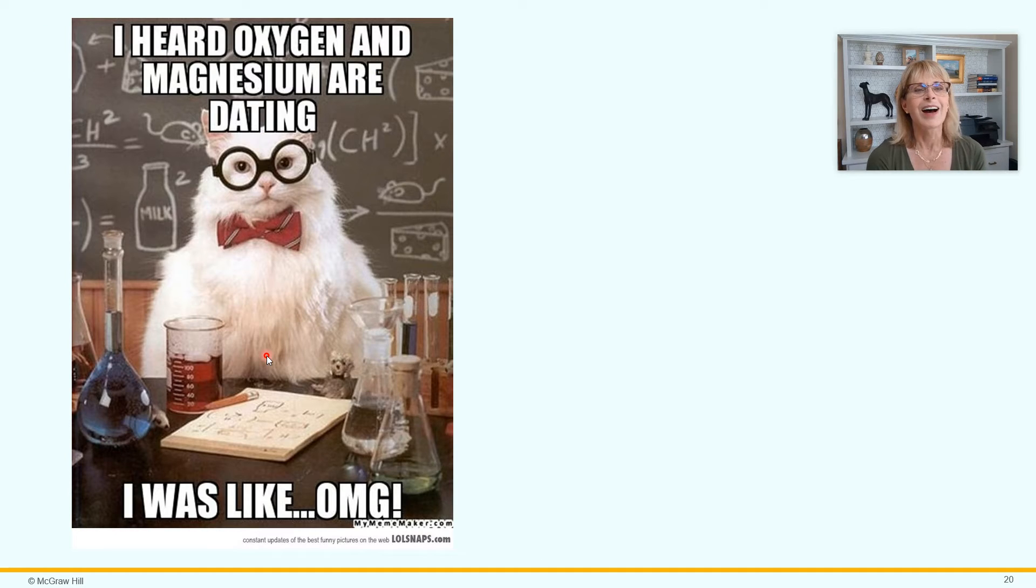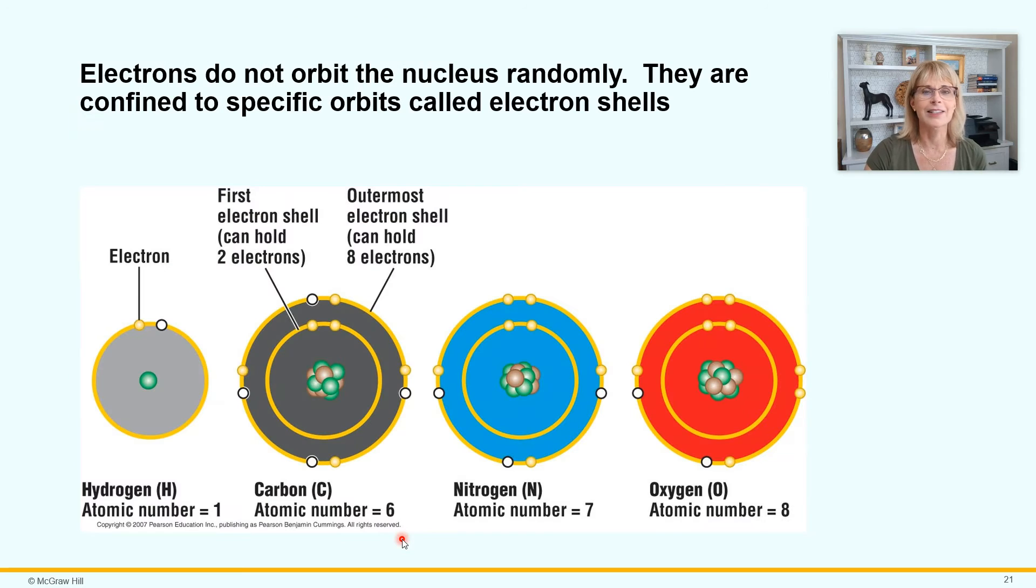Nerd humor. I hear oxygen and magnesium are dating, and I was like, OMG, because the chemical symbol for oxygen is O, and the chemical symbol for magnesium is Mg. Yeah, I got lots of these.